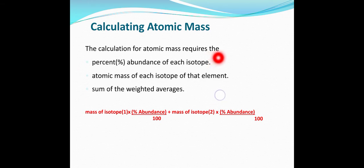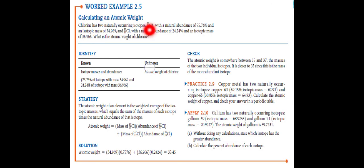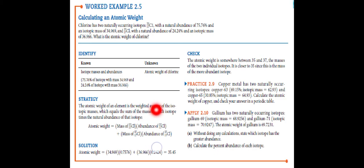To calculate atomic mass, you need the percent abundance of each isotope and the isotopic mass of each. Atomic mass = (mass of isotope 1 × abundance1 / 100) + (mass of isotope 2 × abundance2 / 100). For chlorine: Cl-35 and Cl-37. Multiplying each isotope's mass by its abundance and summing gives an atomic weight of 35.45 amu.